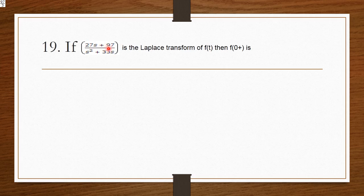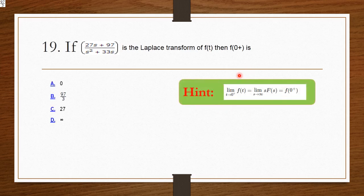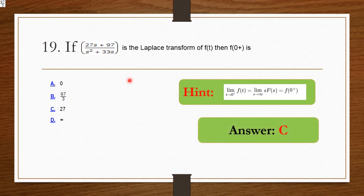If (27s + 97) / (s² + 33s) is the Laplace transform of f(t), then f(0) — here we have to apply the initial value theorem. Using the initial value theorem, the answer is 27. Option C is the right answer.